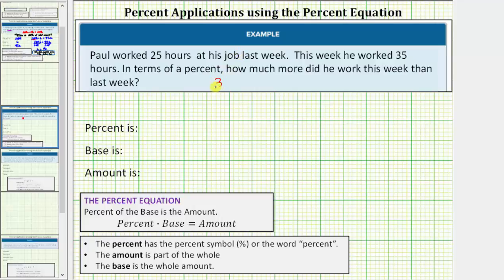Well, if he worked 35 hours this week and 25 hours last week, 35 minus 25 is equal to 10. We know he worked 10 more hours this week than last week, but we're asked in terms of a percent how much more did he work this week than last week.